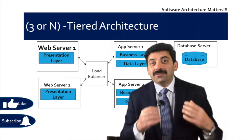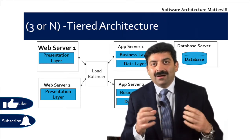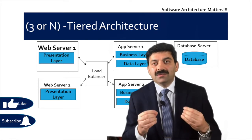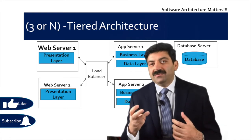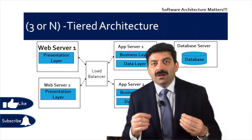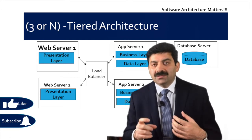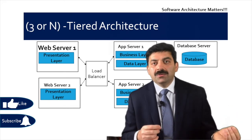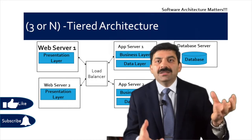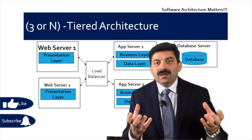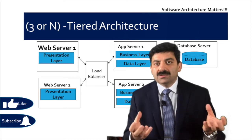Why do we need this three-tier or n-tier architecture? The first benefit is scalability. If your application processing is too much, you can add more app servers. If there are too many users, you can add more web servers. Web servers and app servers can scale independently of each other, allowing the system to handle many more user requests.